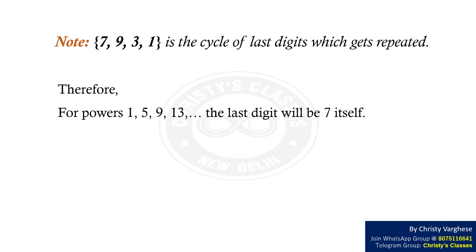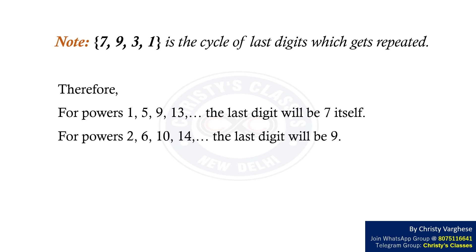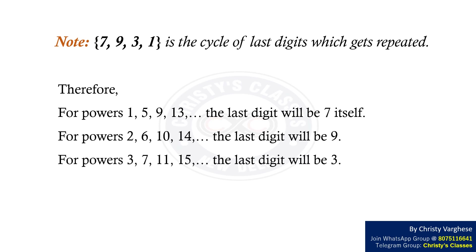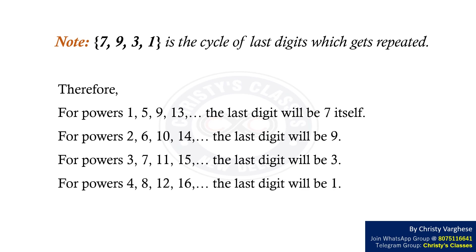Therefore, for powers 1, 5, 9, 13, etc., the last digit will be 7 itself. For powers 2, 6, 10, 14, etc., the last digit will be 9. For powers 3, 7, 11, 15, etc., the last digit will be 3. For powers 4, 8, 12, 16, etc., the last digit will be 1.